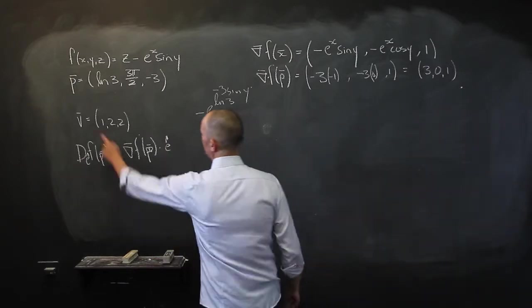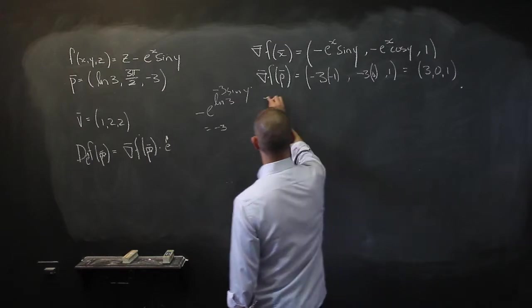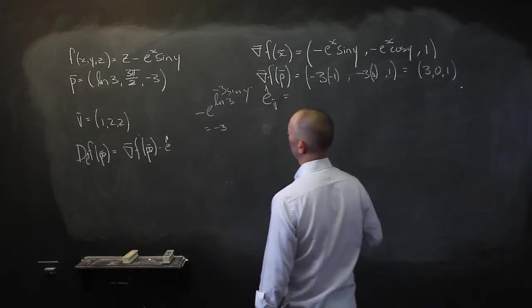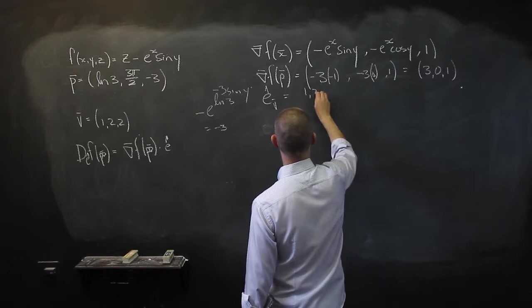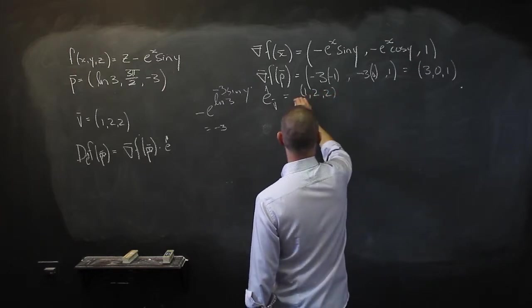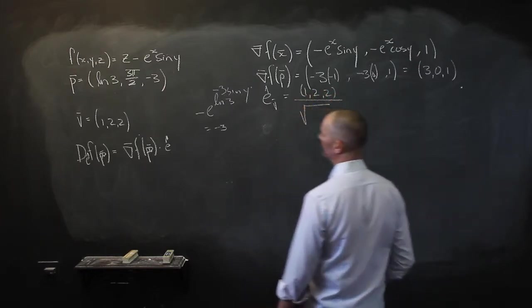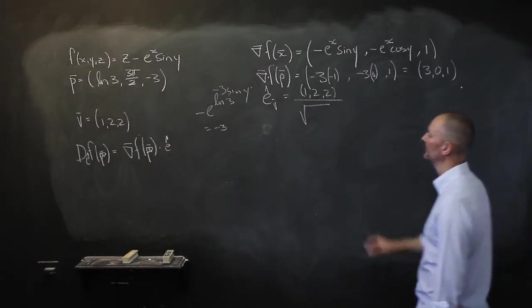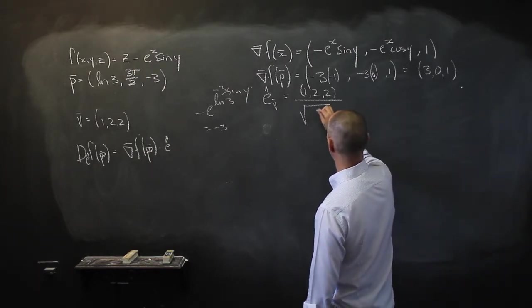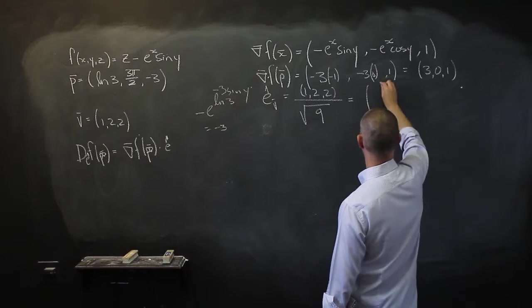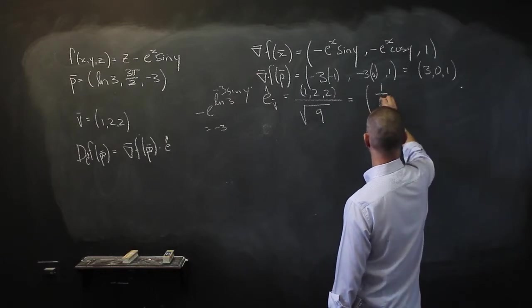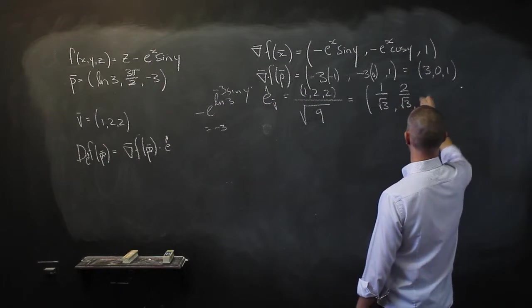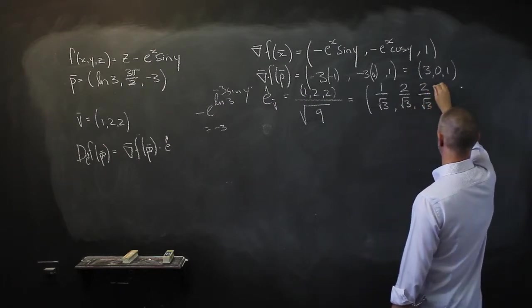Now let's convert the direction vector into a unit vector. The unit vector e of vector (1, 2, 2) is (1, 2, 2) divided by the square root of 1 squared plus 2 squared plus 2 squared, which is the square root of 9 = 3. So we get (1/3, 2/3, 2/3).